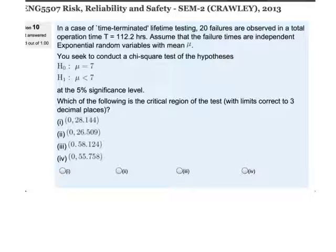That means we can use a chi-square test. H0 is mu equals 7, H1 is mu less than 7 at the 5% significance level.